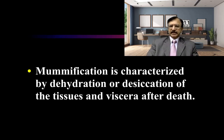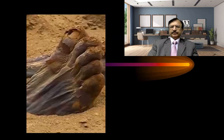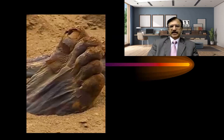Mummification is basically characterized by dehydration and desiccation of the tissues and viscera after death. There is leathery hardening of the skin, and the features are preserved, which help in identification. The foot and legs shown here are mummified — dried, shriveled, desiccated, and dehydrated.